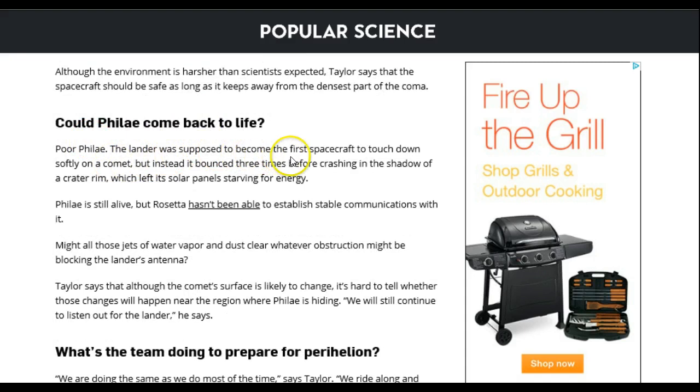The lander was supposed to become the first spacecraft to touch down softly on a comet, but instead it bounced three times before crashing in the shadow of a crater rim, which left its solar panels starving for energy. Filet is still alive, but Rosetta hasn't been able to establish stable communication with it.